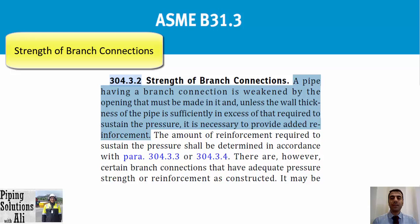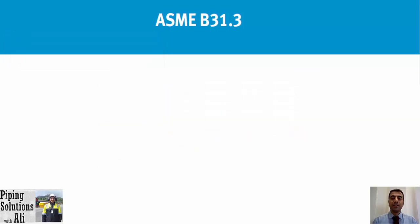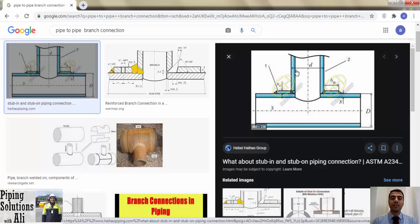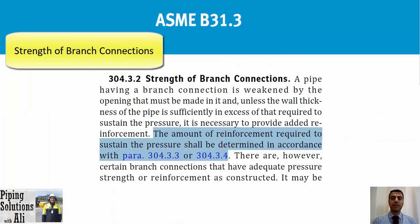This part of the paragraph says that if the difference between the thickness of the delivered pipe and the thickness required to sustain pressure is as much as what is specified by the code, there is no need to provide added reinforcement for the branch connection. It means that the extra thickness of the pipe beyond what is required to sustain the pressure can compensate for the weakness caused by the opening for the branching.